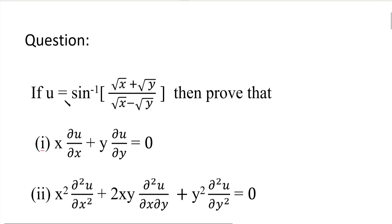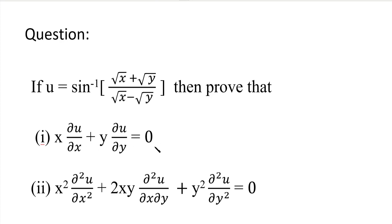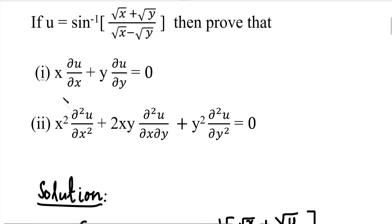The question is: if u equals sin inverse of (root x plus root y) divided by (root x minus root y), then prove two parts. First part: x times ∂u/∂x plus y times ∂u/∂y equals 0. Second part: x² times ∂²u/∂x² plus 2xy times ∂²u/∂x∂y plus y² times ∂²u/∂y² equals 0.